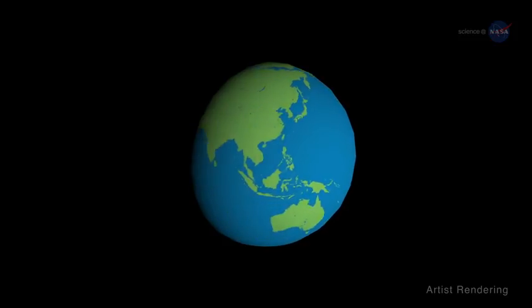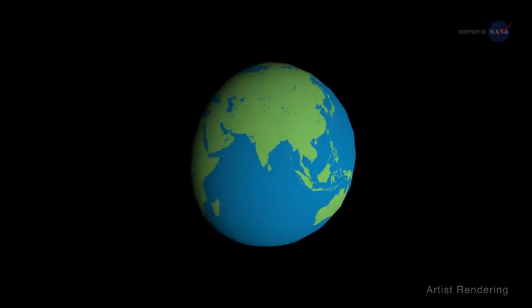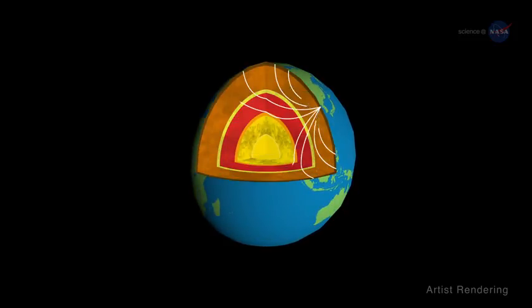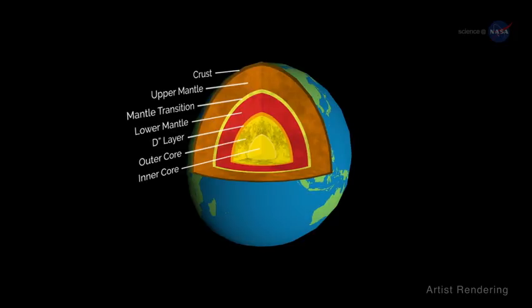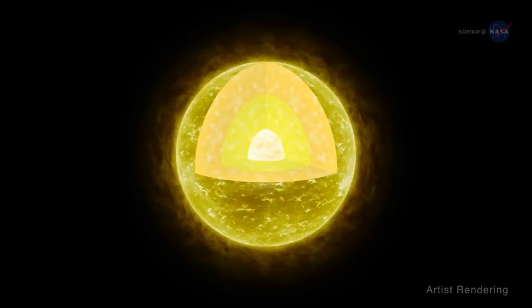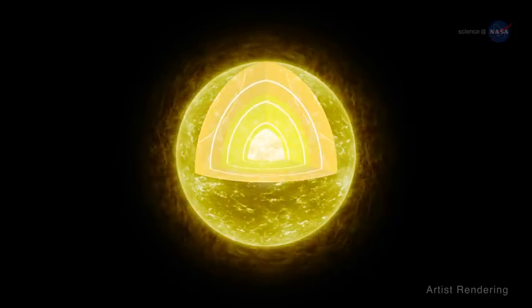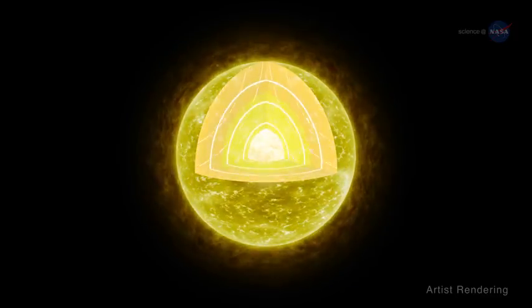Astro-seismology is akin to the science of seismology. Earthquakes send waves rippling through the body of Earth. By analyzing those waves, seismologists can figure out the interior structure of our planet. There are also waves rippling through the interior of stars—acoustic waves.